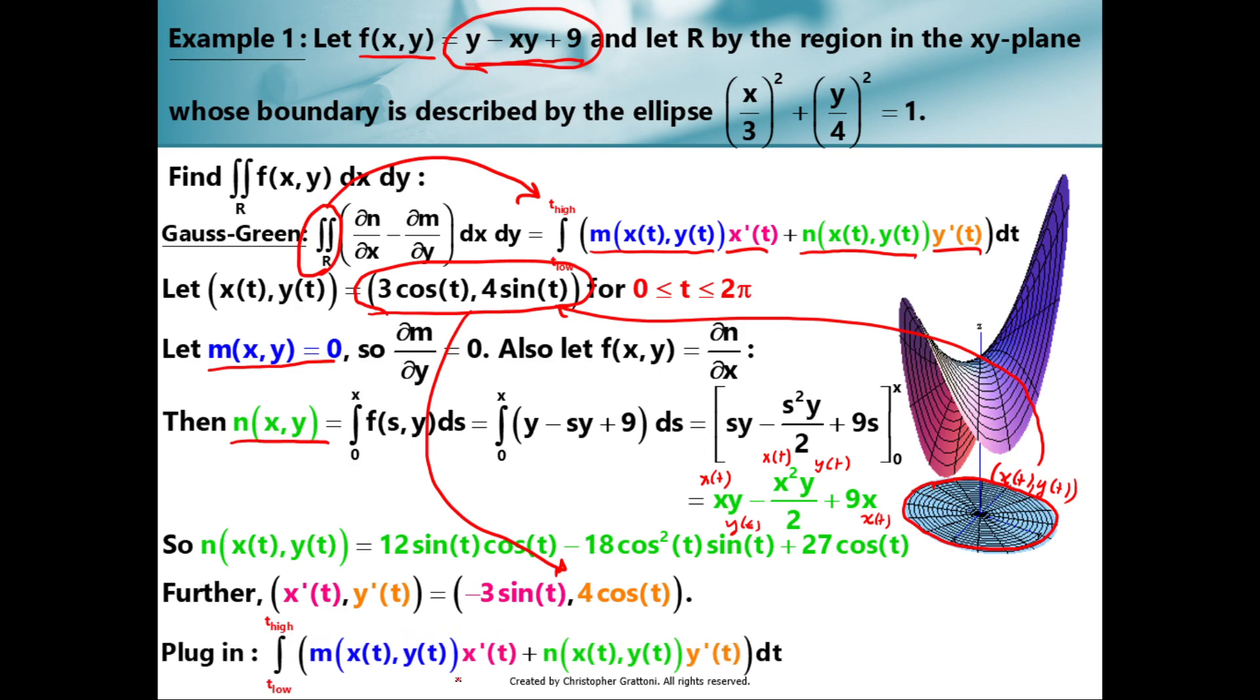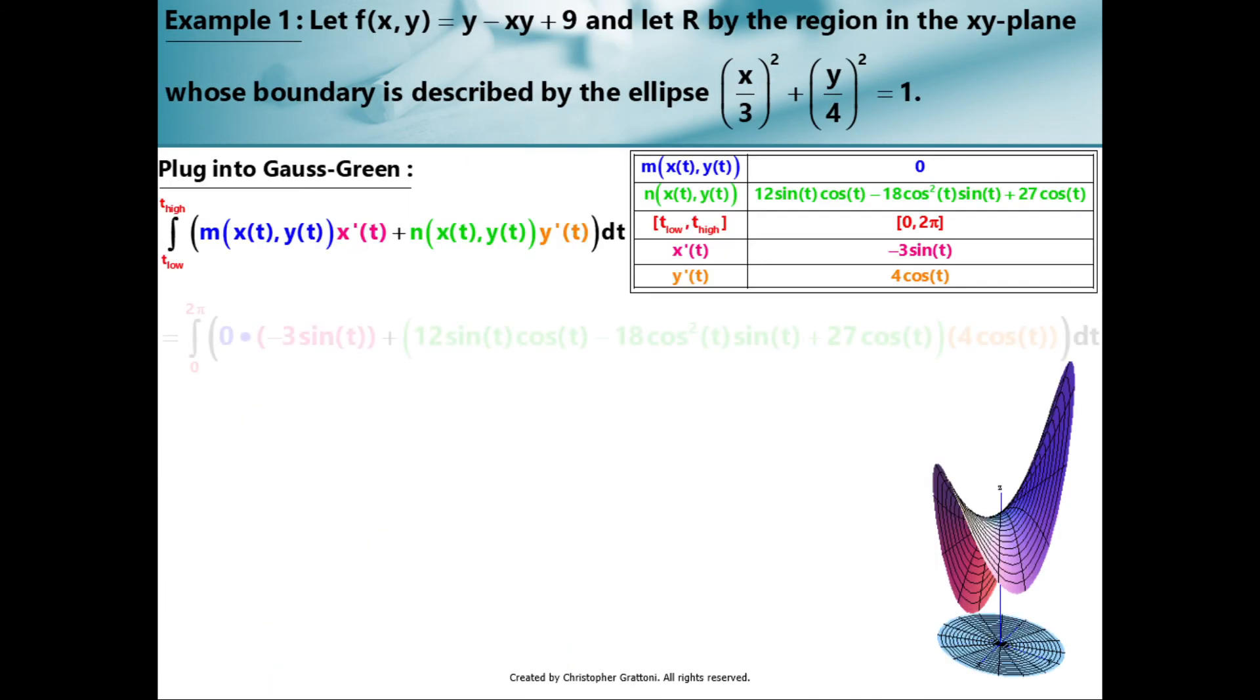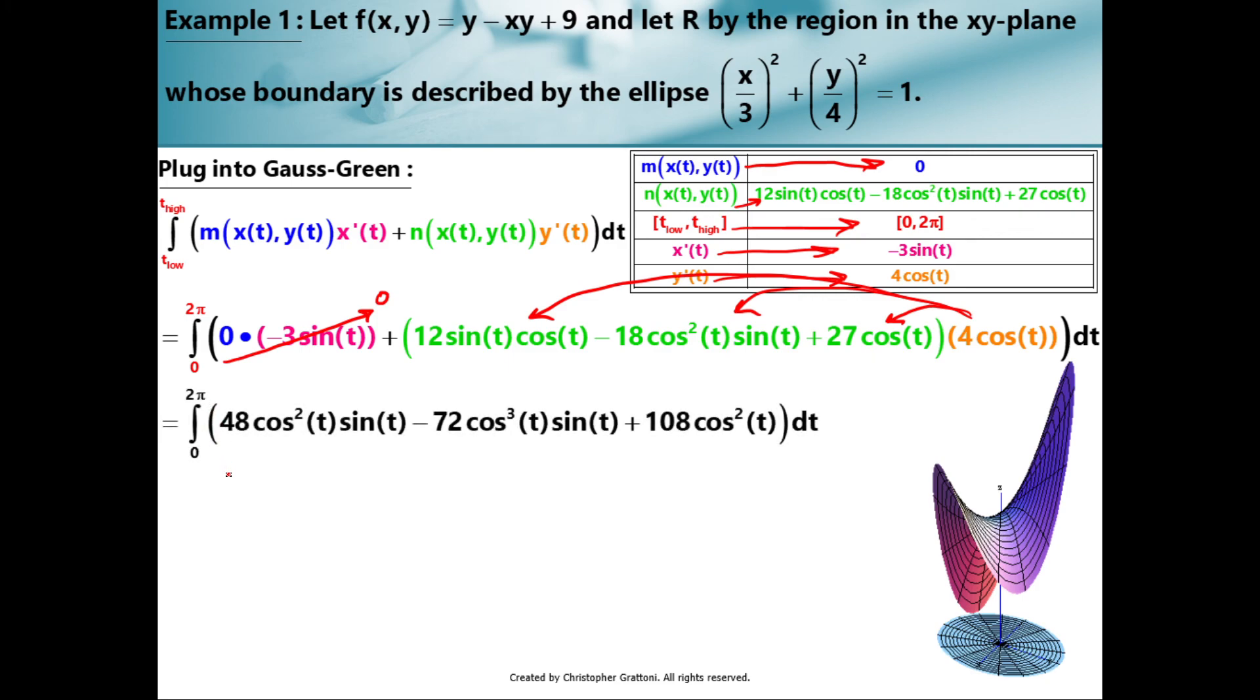And then I also need my x'(t) and my y'(t). That's just my tangent vector for my boundary curve here. So I'm going to take my 3cos(t), 4sin(t) and take the derivative. I have -3sin(t), 4cos(t). I've got all of the pieces here. I have everything I need. If you compare colors between the Gauss-Green formula and everything that's on the screen, I have all of the necessary pieces that I need to plug in. So I have managed to turn a double integral that would be difficult to compute. And I've managed to turn it into a single integral that's much easier to compute. So I'm going to plug in all of these puzzle pieces, all of these color-coded puzzle pieces. And just to make sure it's all summarized, I put it here in a table. So m(x(t), y(t)) is zero. Here's n(x(t), y(t)). Here's my t_low to t_high, my limits of integration. And here's my x'(t) and my y'(t). Plug in all of those pieces.